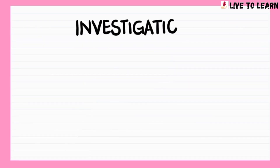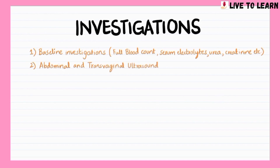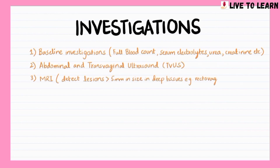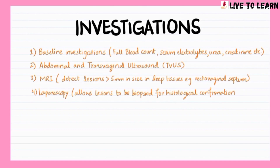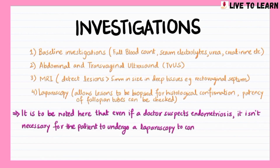In addition to baseline investigations such as a full blood count, serum electrolytes, urea, and creatinine, an abdominal or transvaginal ultrasound can be useful for identifying rectal disease or endometriosis involving the ovaries. An MRI can detect lesions greater than 5 mm in size, particularly in the deep tissues such as the rectovaginal septum. Laparoscopy, which is the gold standard, allows lesions to be biopsied for histological confirmation and patency of fallopian tubes can also be checked. It is to be noted that even if a doctor suspects endometriosis, it isn't necessary for the patient to undergo a laparoscopy to confirm the diagnosis because the management will be the same regardless.